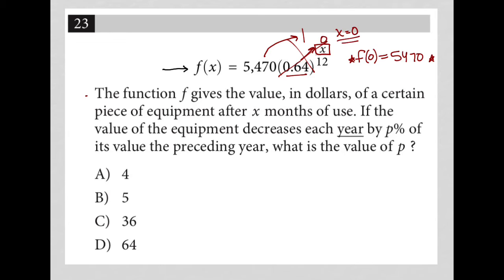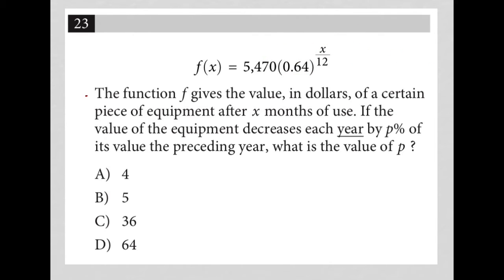The next sentence says: if the value of the equipment decreases each year by p% of its value the preceding year, what is the value of p? I only have one place to look for information, and that's the function itself. I've already dealt with why $5,470 is here — that's the original value.